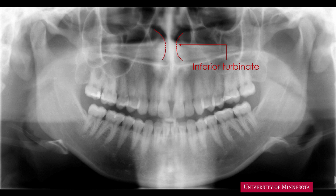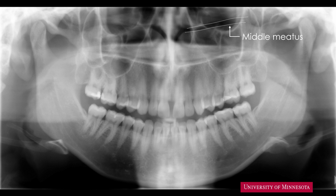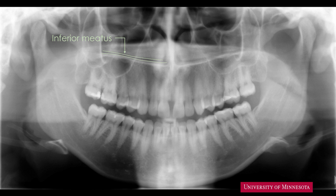If we trace from the common nasal meatus, we can find a radiolucent band, almost horizontal, extending distally. This radiolucent band superimposes over the inferior part of the orbit — this is the middle meatus. On the inferior part of the inferior turbinates, we can see another horizontal radiolucent band. I am showing you the right side of the inferior meatus; please identify the left inferior meatus.